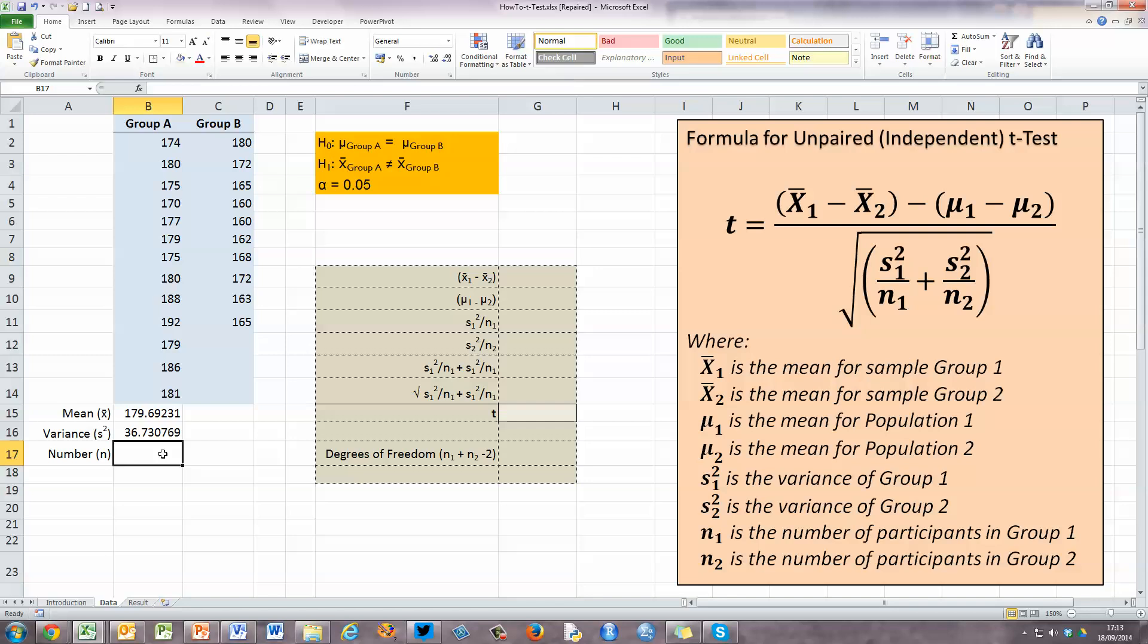And so I'm going to use Excel's COUNT function for that, equals C-O-U-N-T, and again, select all the values with my mouse under group A here, closing bracket and press enter. And I need to do the same for group B, but I'm just going to use, to speed this up, I'm going to use Excel's autofill tool to copy those three formulas and do the same for group B.